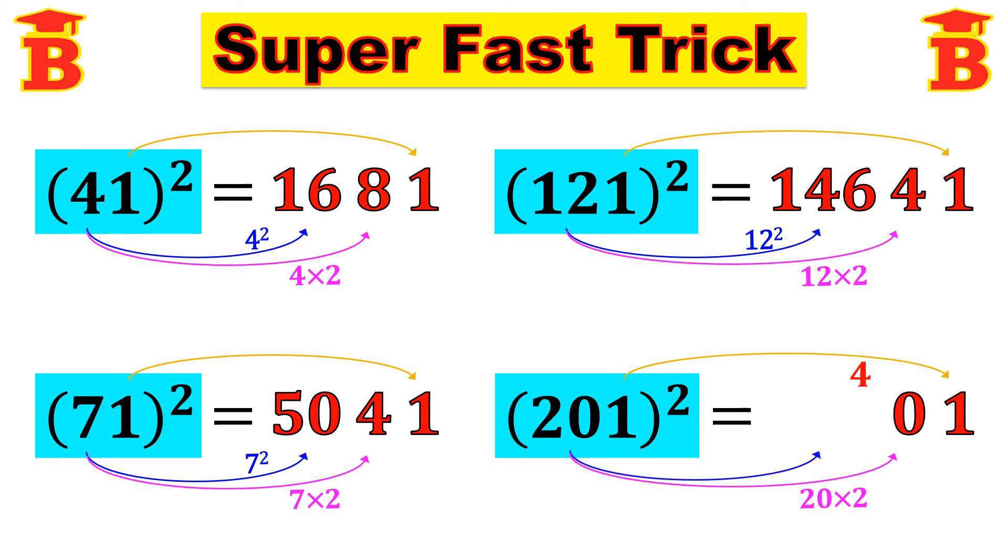Next step, same number 20, square it. So 20 square is 400. Already we have a carry number 4. So 400 plus 4, 404. Therefore, 201 whole square is 40401.